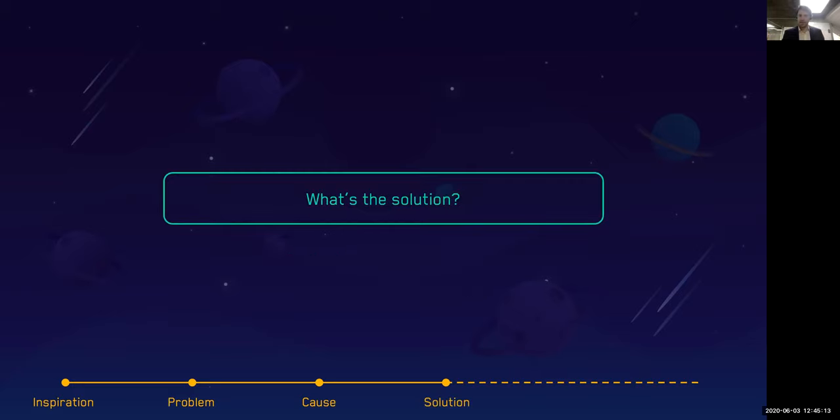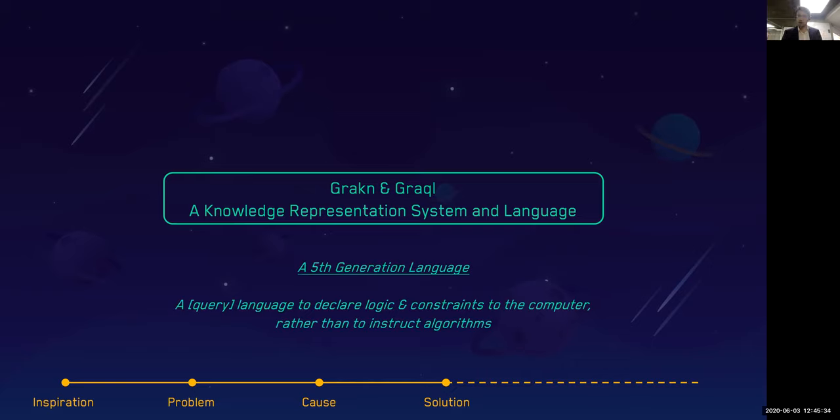This slide I hope is self-explanatory. We built Graken around this—Graken being the knowledge representation system, and Grakel as the language to query, reason, and model. We'll go over that in the next couple of slides. For those interested, Grakel as a language is a fifth generation language, and we talk about a fifth generation language that is able to declare logic and constraints to the computer instead of instructing algorithms.